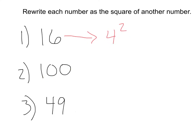We have 100 here. 100 can be rewritten as 10 squared, 10 times 10 is 100. Same value, but written as a square. 49, same thing. This would be 7 squared, because 7 times 7 is 49.